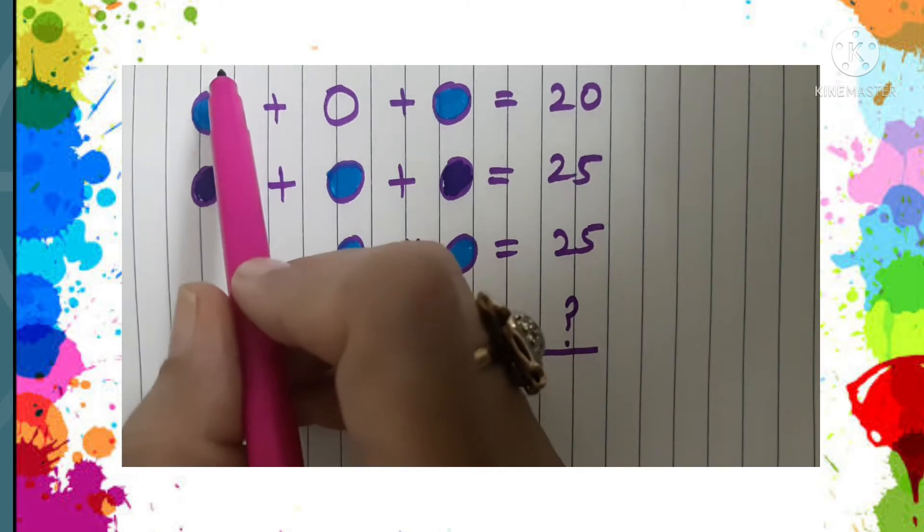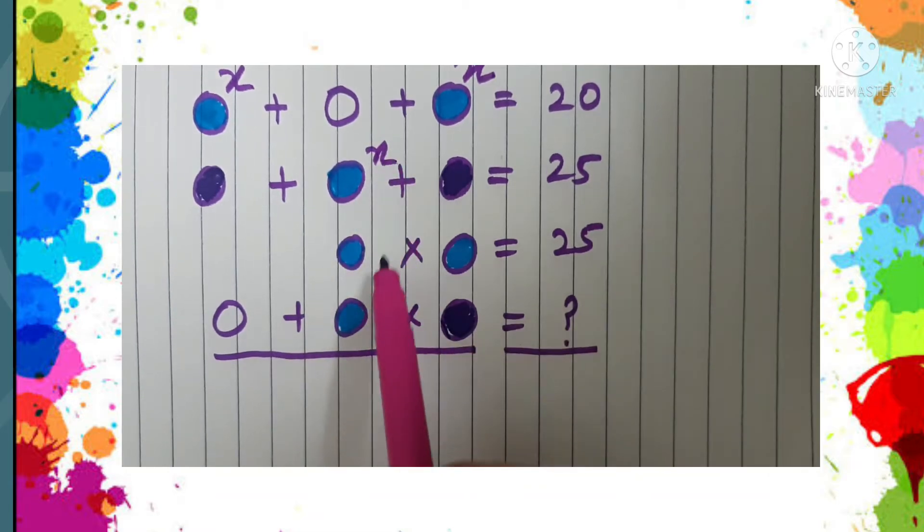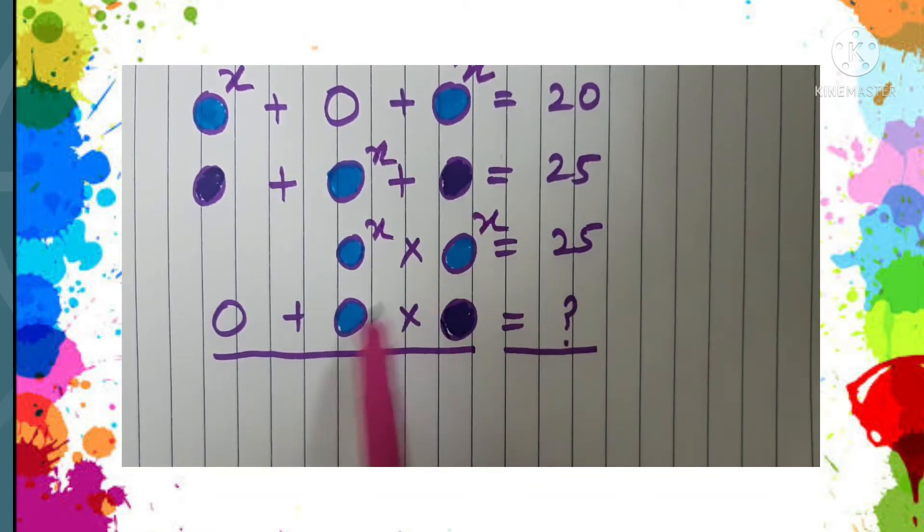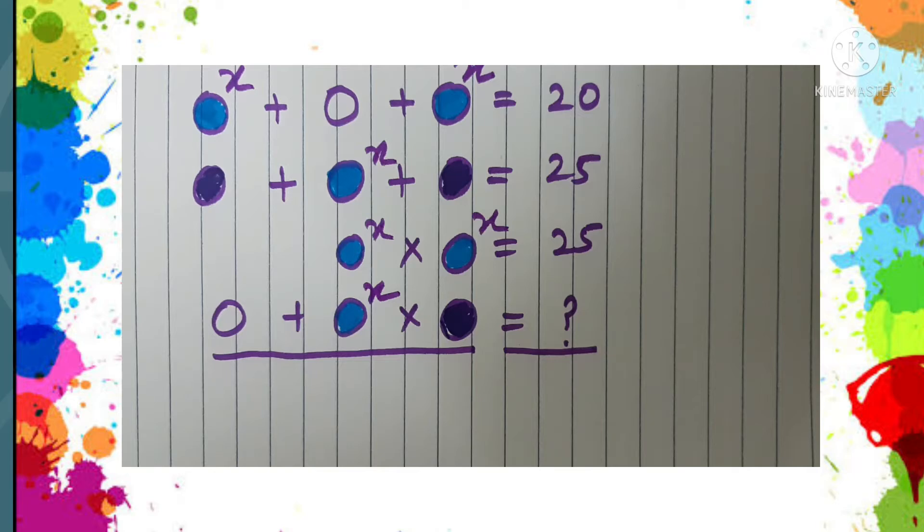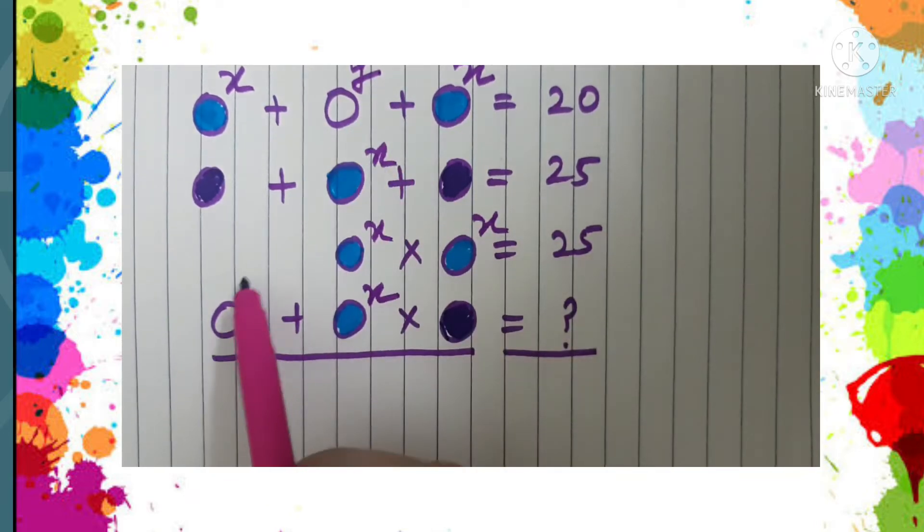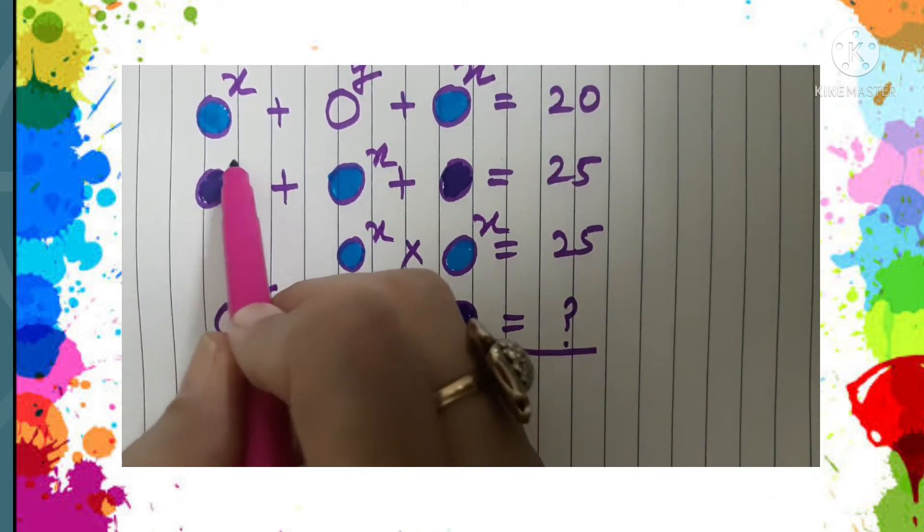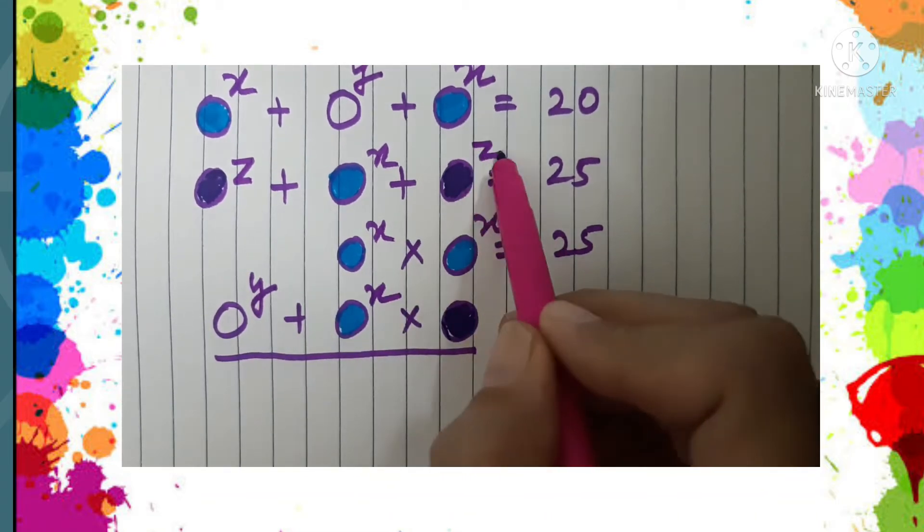Let us take some variables for depicting them. I am taking X, so we have replaced all the blue circles with X, the white circles with Y, and the remaining purple circles with alphabet Z. These are the variables.